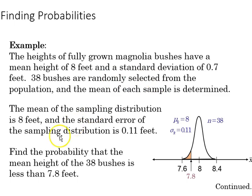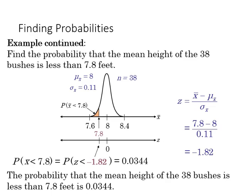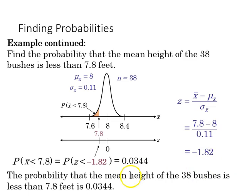Continuing the example, we want to find the probability that the mean height of the 38 bushes is less than 7.8 feet — which, as you can tell from the normal distribution, is going to be highly unlikely. We find the z-score using x-bar minus the mean: 7.8 minus 8 gives us negative 0.2, divided by the standard error of 0.11, giving us negative 1.82. Using the z-score table, the cumulative area for that score is 0.0344, so the probability that the mean height is less than 7.8 feet is 0.034, or 3.44 percent.